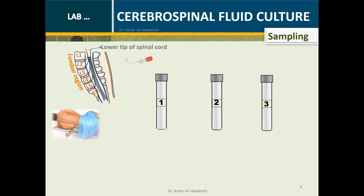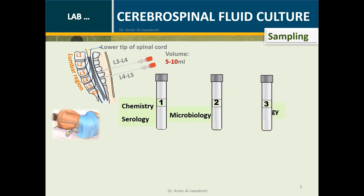CSF Sampling is performed via lumbar puncture into L3-4 or L4-5. A volume between 5 and 10 mL is taken and distributed equally into three tubes: Tube 1 for chemistry and serology, Tube 2 for microbiology, and Tube 3 for hematology.